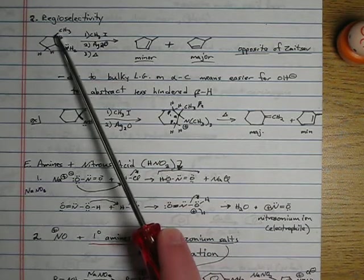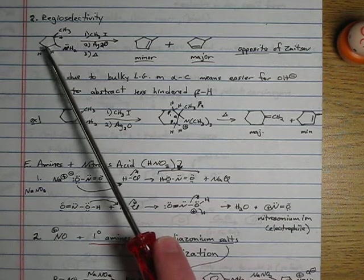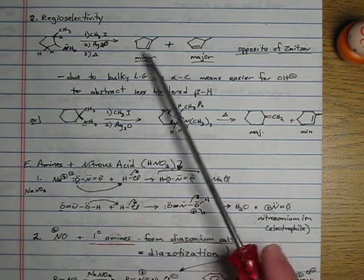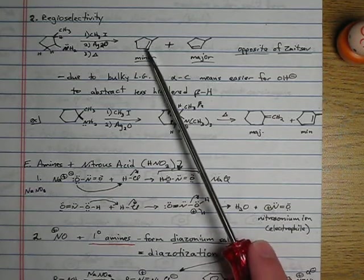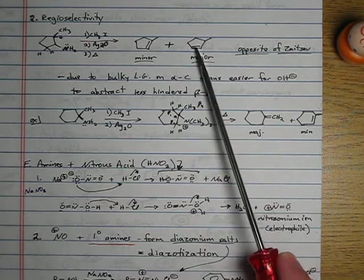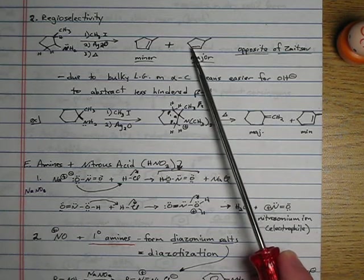Note, if normally you would do an elimination, you would expect these two products, because this is our leaving group, and we've got a hydrogen alpha on this carbon here. We've got two hydrogens alpha on this carbon here, and normally we'd expect this to be our major product, because that gives us our more substituted alkene, and this to be the minor product. Remember that's what Zaitsev said.